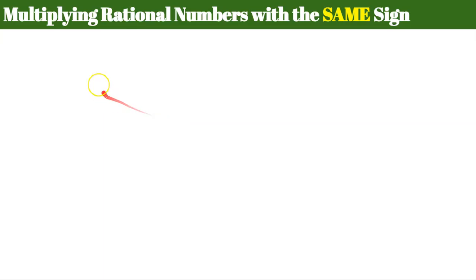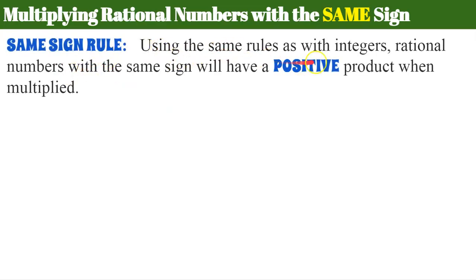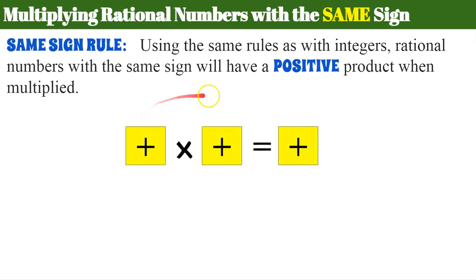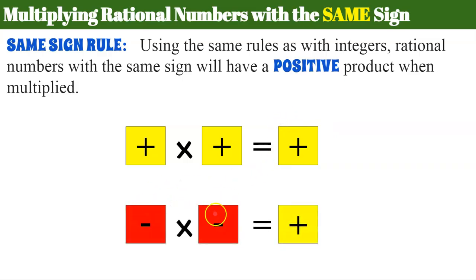Let's review our rules — they're going to be familiar to you. Multiplying rational numbers with the same sign uses the same rules as integers: rational numbers with the same sign will have a positive product when multiplied. Two positive factors multiplied equals a positive product. Two negative factors multiplied also gives a positive product. Same sign, positive product, just as with integers.